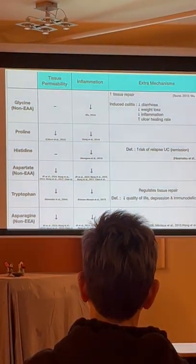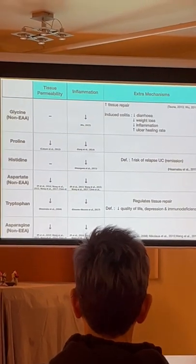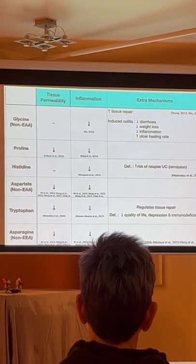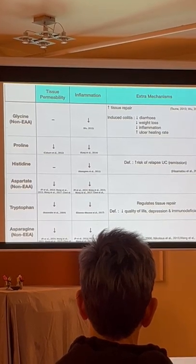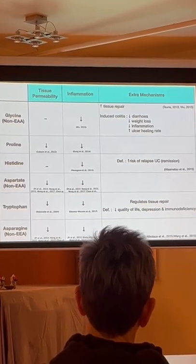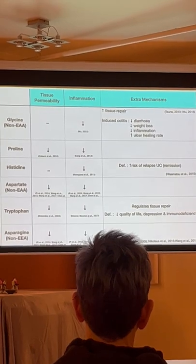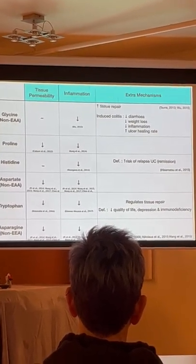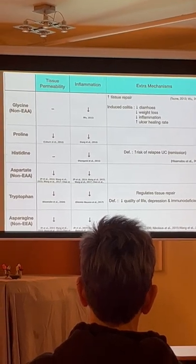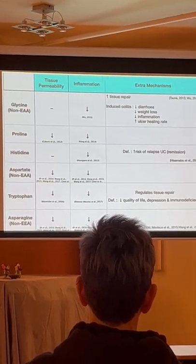Lastly, as you can see here, glycine, fantastic for helping heal tissues, as well as when they induced inflammation in the colon in mice, they supplemented with glycine. They had a reduced amount of episodes of diarrhea, improvement in weight loss, reduced inflammation, as well as the ulcers were far better.